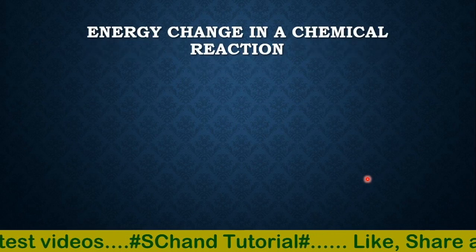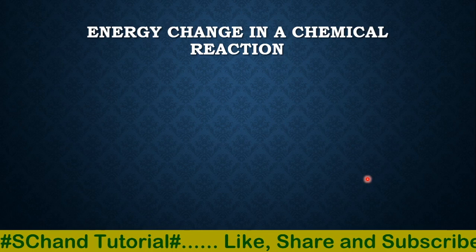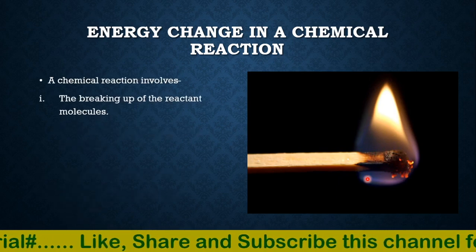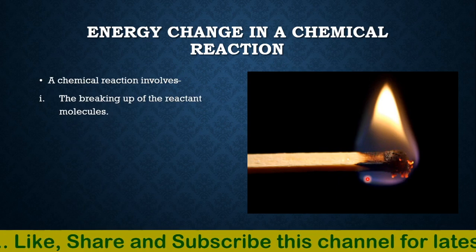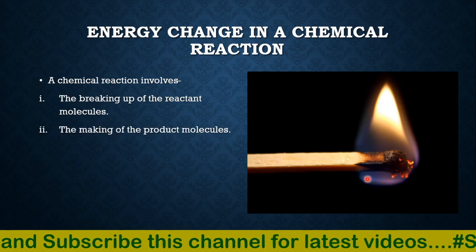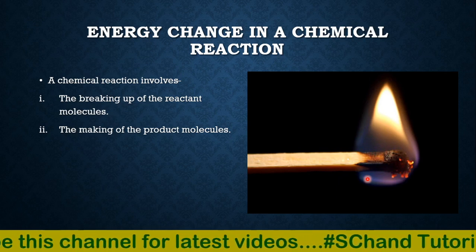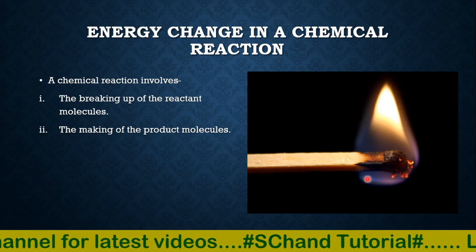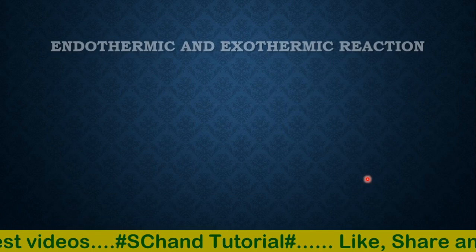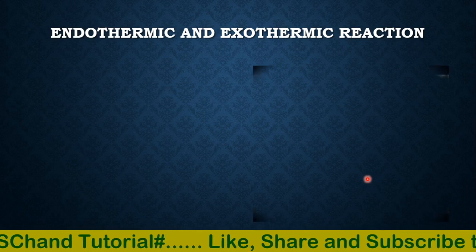What are the energy changes taking place in a chemical reaction? Knowing that atoms rearrange themselves, we understand that during a chemical reaction two things happen: the breaking up of reactant molecules and the making of product molecules. The energy involved in these two steps is not equal, so the overall reaction either releases or absorbs energy. In most cases, energy is absorbed or given out in the form of heat; however, in many cases light is also absorbed or given out. This leads to two types of reactions: endothermic and exothermic.